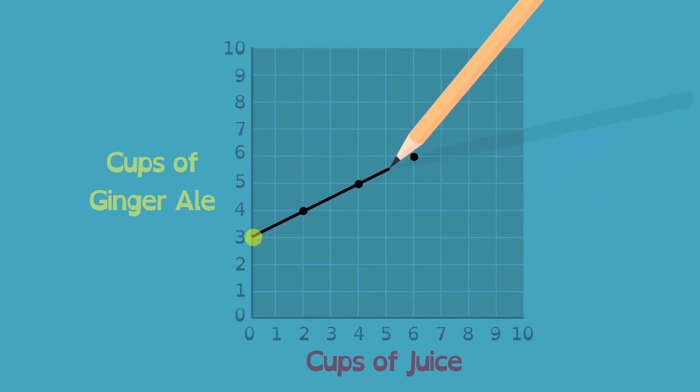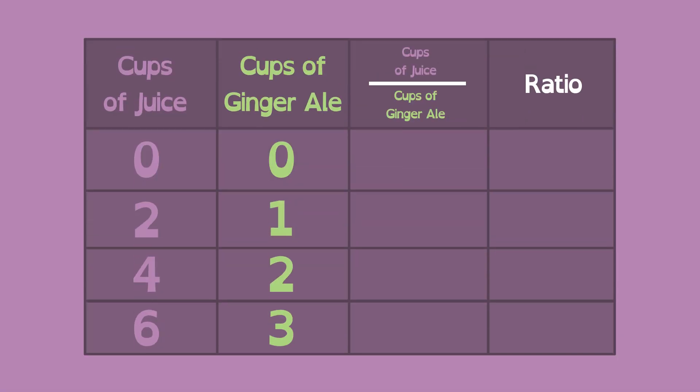Check out this graph. The line starts at 3 cups of ginger ale. So we would need to add 3 to all our previous answers on the table.